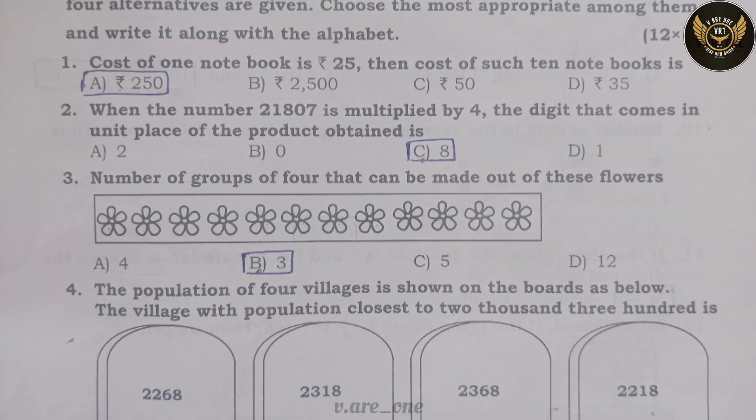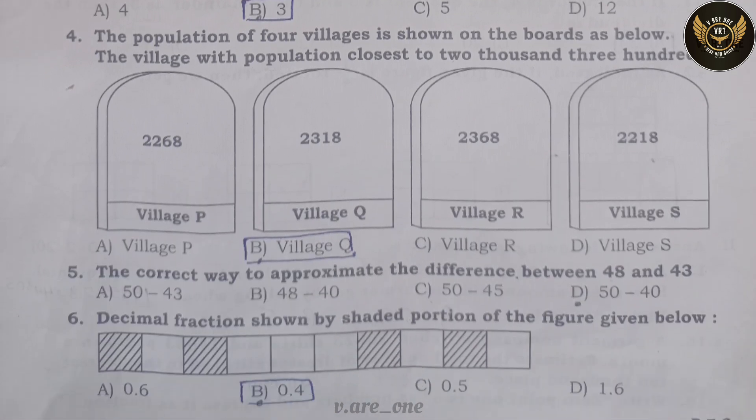Third Question: The number of groups of 4 that can be made out of these flowers is Option B: 3. Fourth, the population of 4 villages is shown on the boards as below. The village with population closest to 2300 is Option B: Village Q.